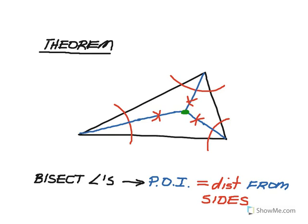All of the angle bisectors are concurrent and they intersect in the middle of the triangle. That point of intersection is equidistant from the sides of the angle. So if I was to take a perpendicular from that point of intersection to each of the sides of the angle, those would all be the same length.